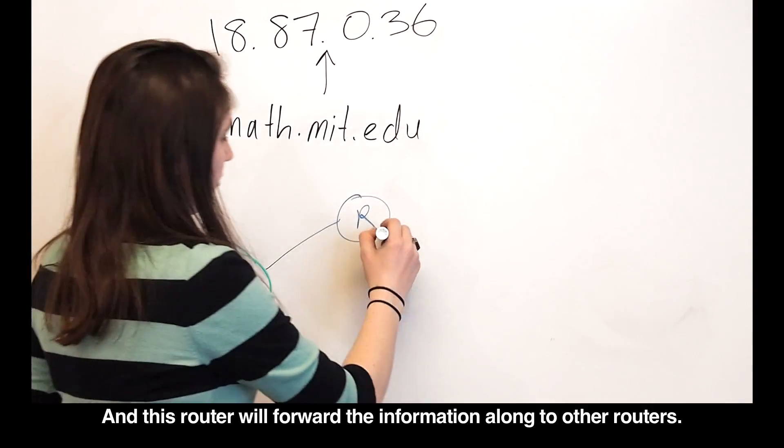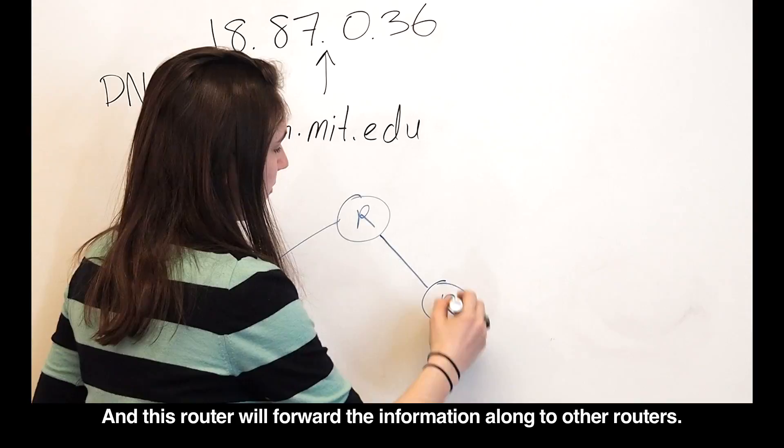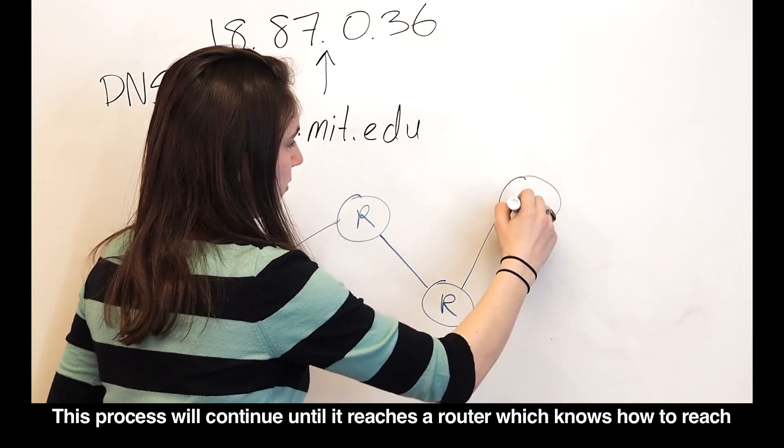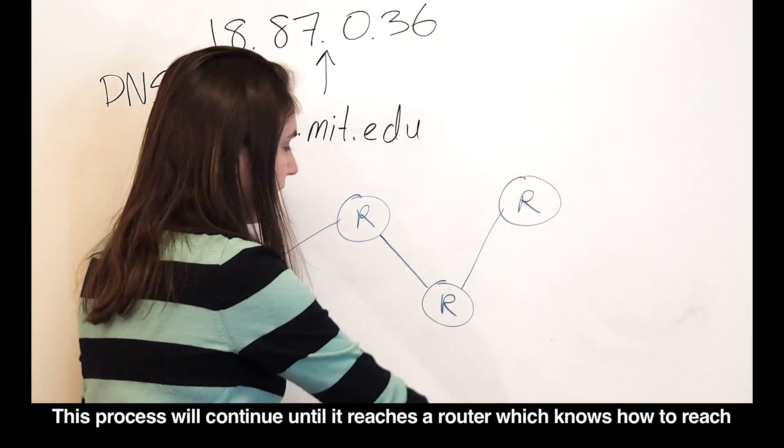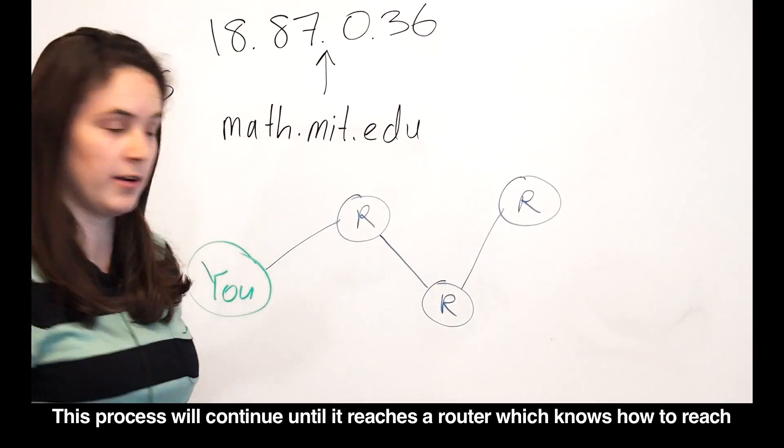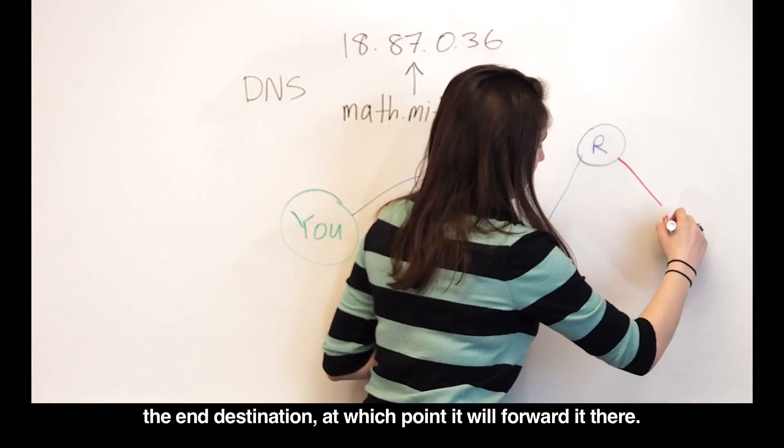And this router will forward the information along to other routers. This process will continue until it reaches a router which knows how to reach the end destination, at which point it will forward it there.